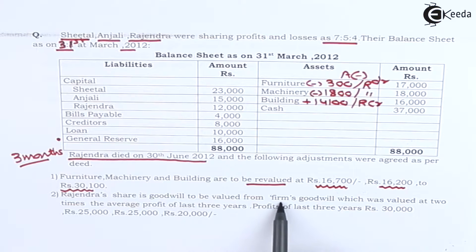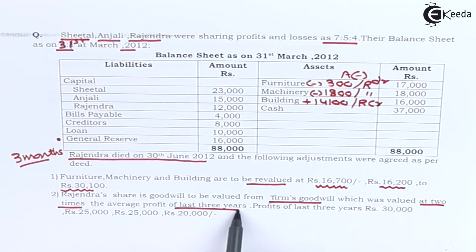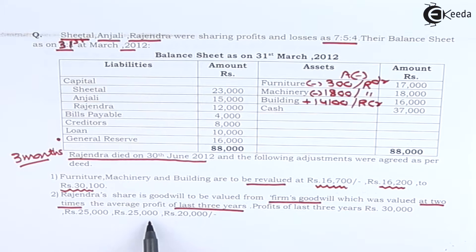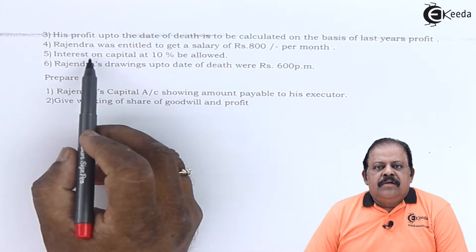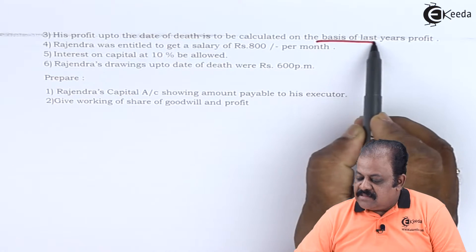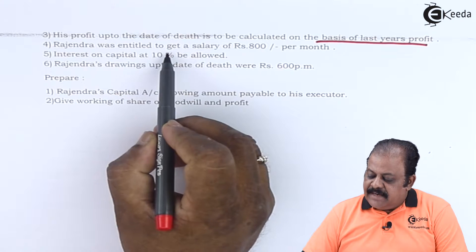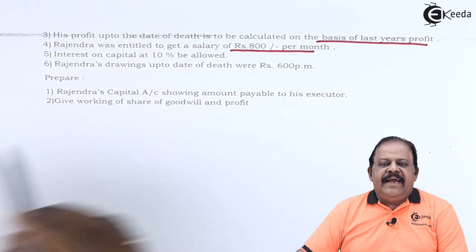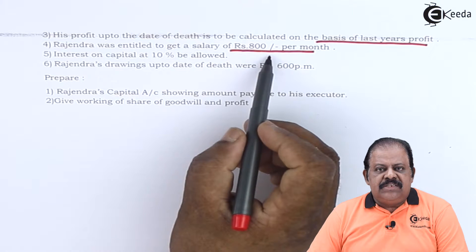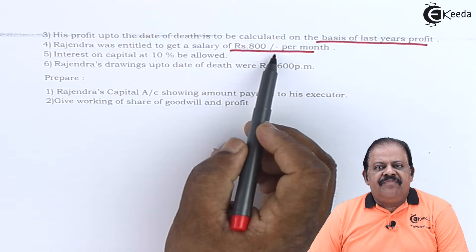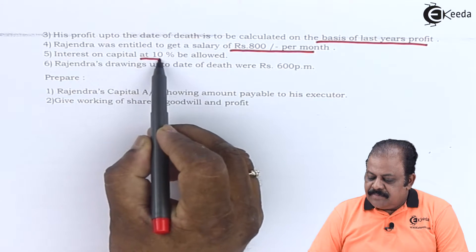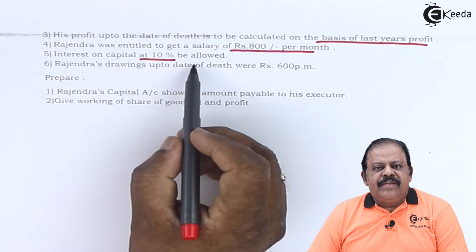Rajendra's share of goodwill is to be valued from the firm's goodwill, which is valued at two times the average profit of the last three years. The profits of the last three years were 30,000, 25,000, and 20,000 — though four years' data is given, we only consider the last three years as required by the question. Rajendra was entitled to a salary of 800 per month and was in the firm for three months before his death.